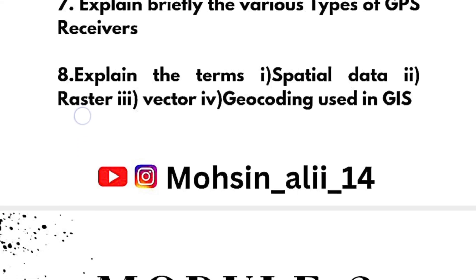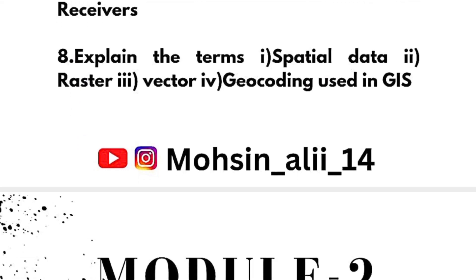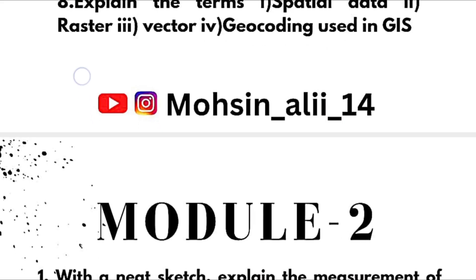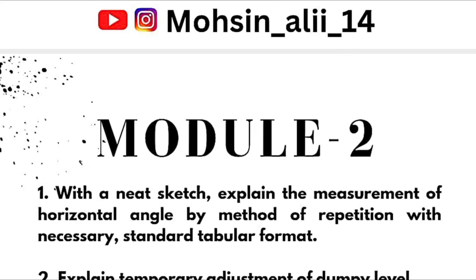Remaining Module 5 questions: Explain briefly the various types of GPS receivers. Explain the terms spatial data, raster, vector, and geocoding used in GIS. This completes your three passing modules — Module 1, Module 3, and Module 5.